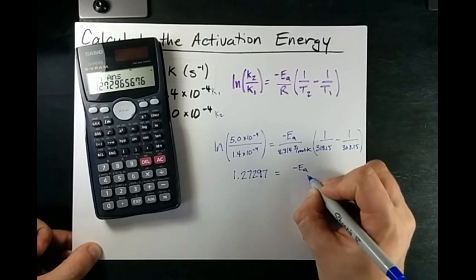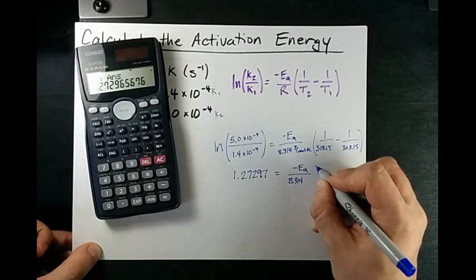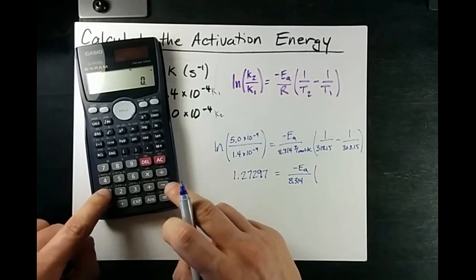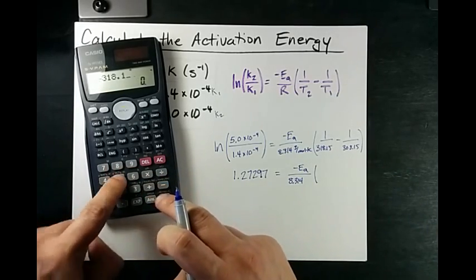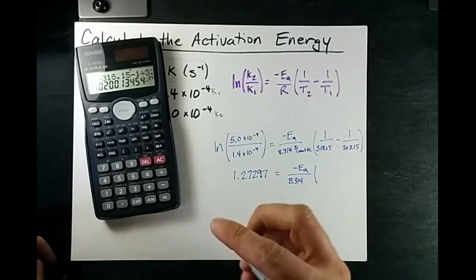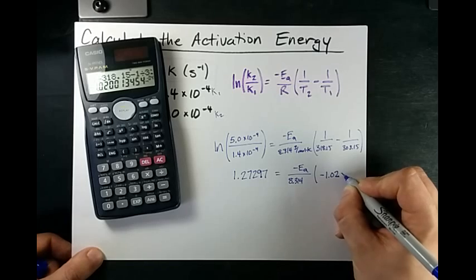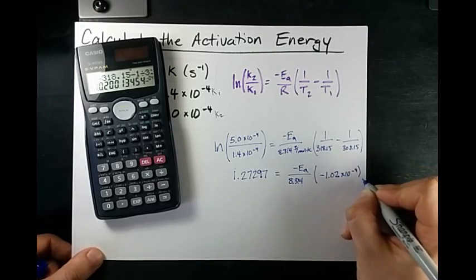Equals negative EA over 8.314 times 1 over 318.15 minus 1 over 308.15. That gives me negative 1.02 times 10 to the negative 4.